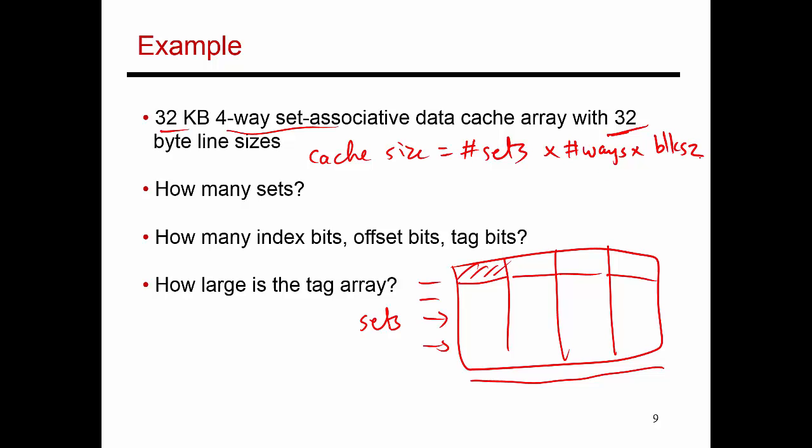Let's fill in what we know over here. The cache size is 32 kilobytes. The number of sets as of now is unknown. The number of ways is four. And the block size is 32 bytes. If I do the math, the number of sets turns out to be 256. So, that's the answer here.